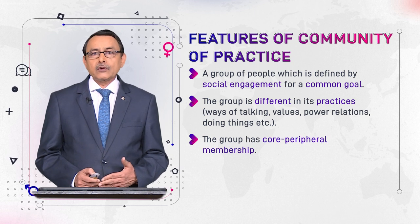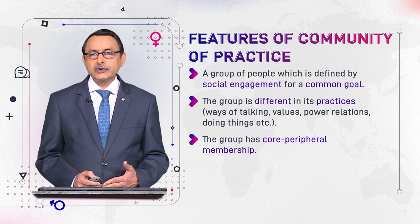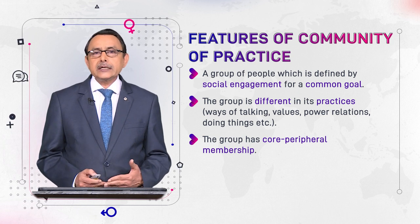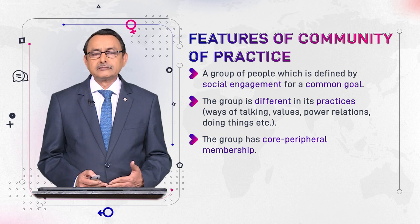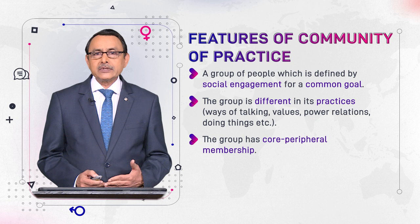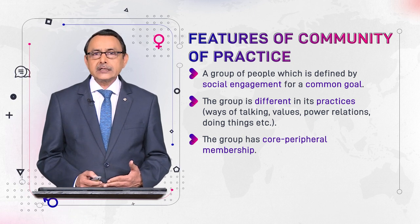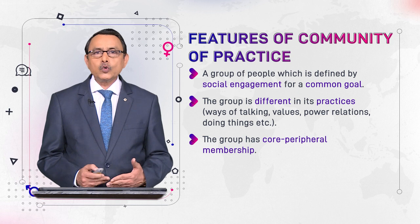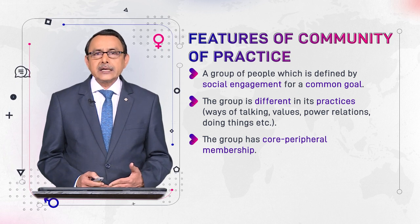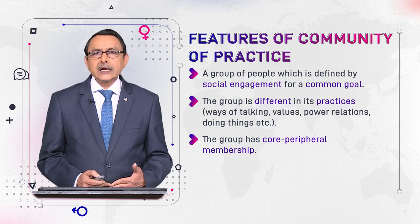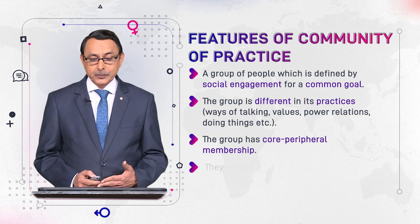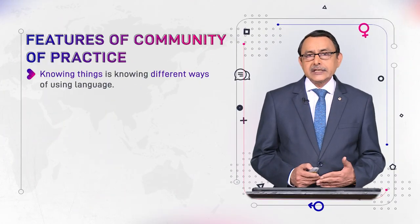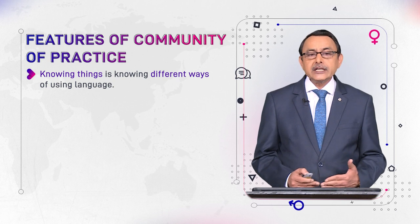The group has core and peripheral membership — this is another feature of community of practice. When a new member comes, they have peripheral or marginal membership of the group, while old members are called core members. The relationship between new and old members makes it a hierarchical system, with a peripheral and core relationship, and they learn by doing things jointly.